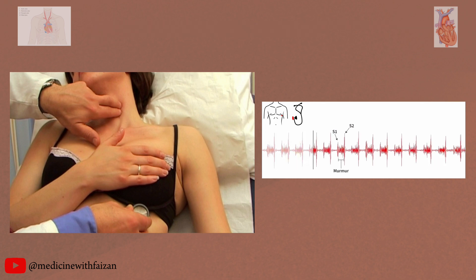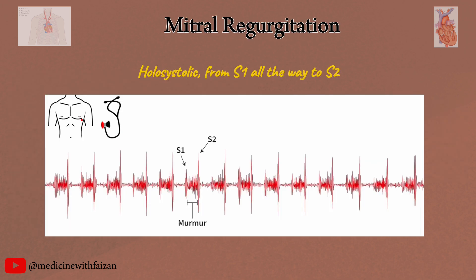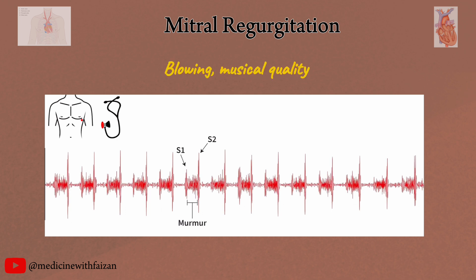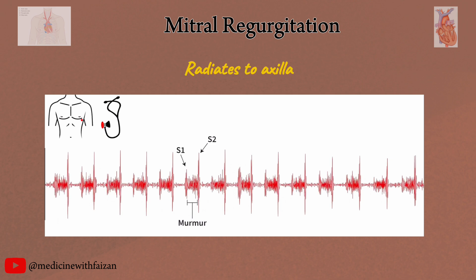This is a holosystolic murmur of mitral regurgitation. The murmur of chronic MR is classically holosystolic, from S1 all the way to S2, and plateau-shaped. In an acute setting, it can be early systolic with a decrescendo character. The murmur of MR has a blowing, musical quality. It is loudest at the apex and radiates to the axilla.